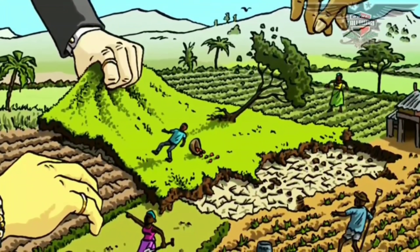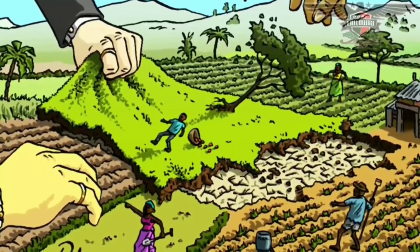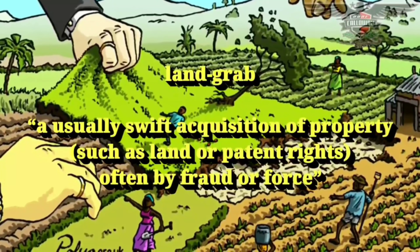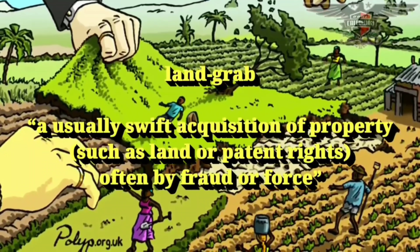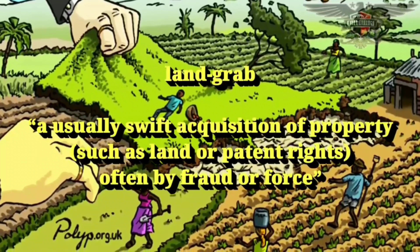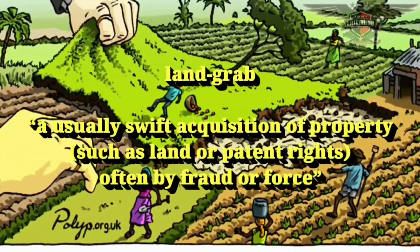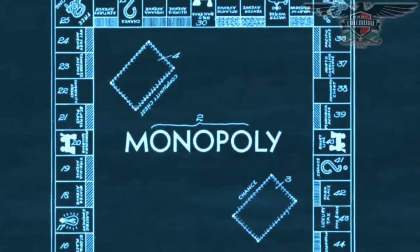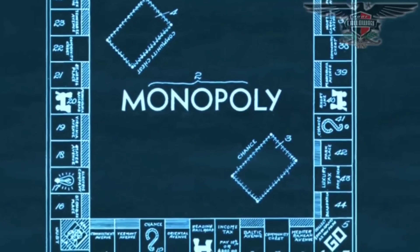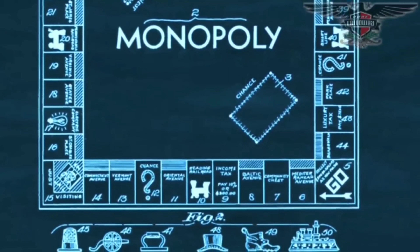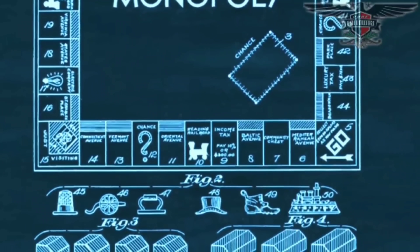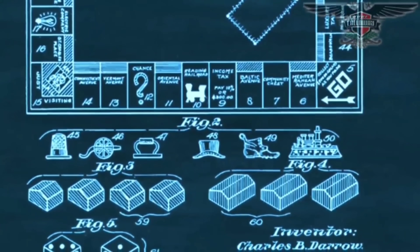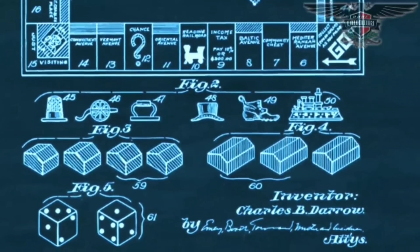According to the Webster's dictionary, the noun land-grab means, quote, a usually swift acquisition of property such as land or patent rights, often by fraud or force, end quote. This is not just some simple board game, as it does expose the duplicities of a federal currency system and the malevolent implications of capital accumulation by taking land and building an empire from the labors of those who were cheated — our ancestors.